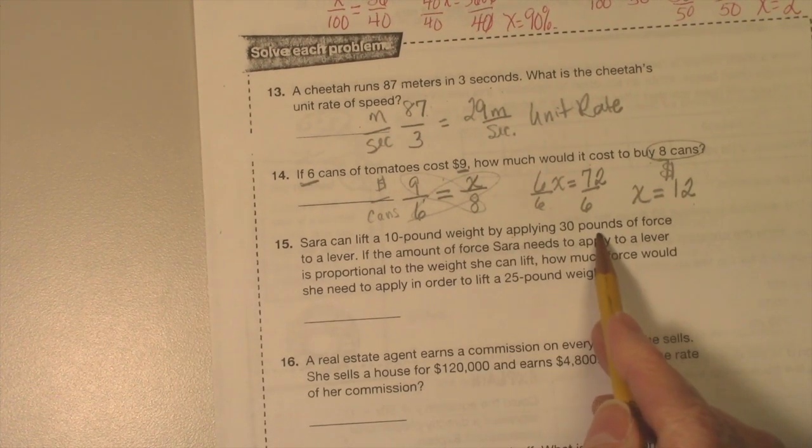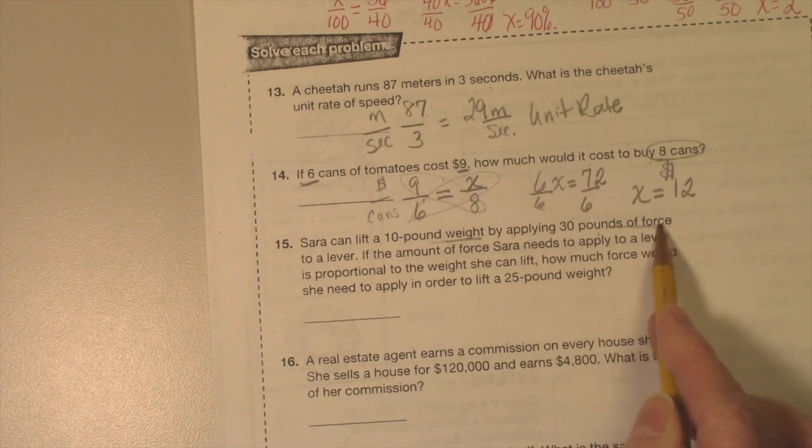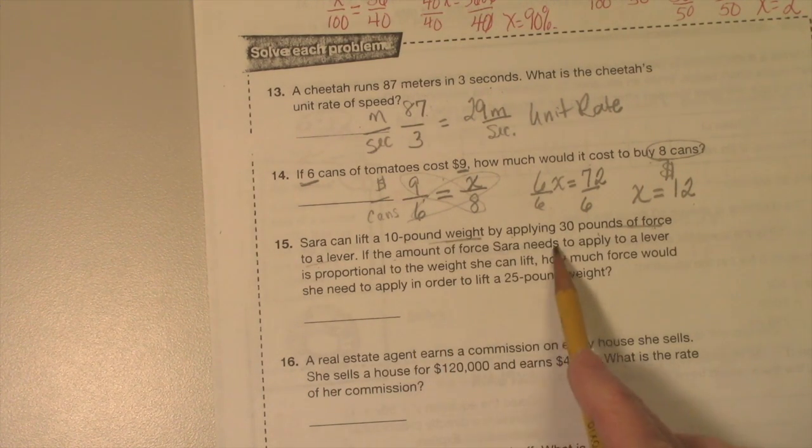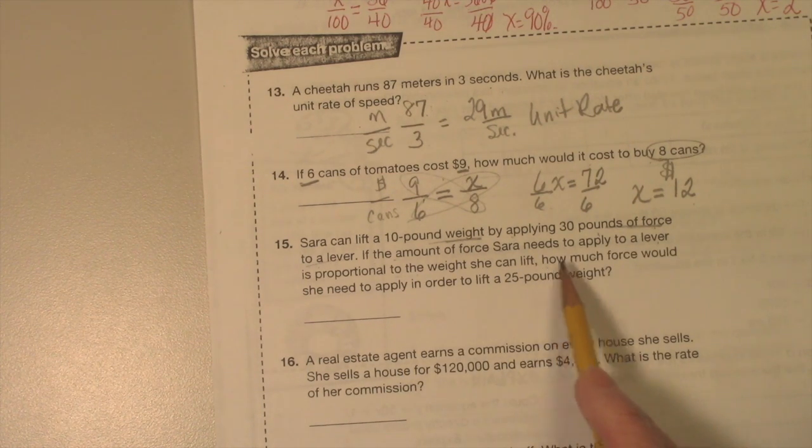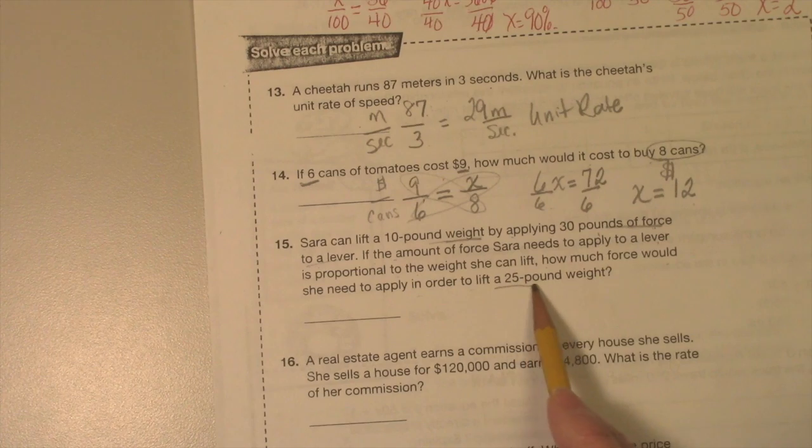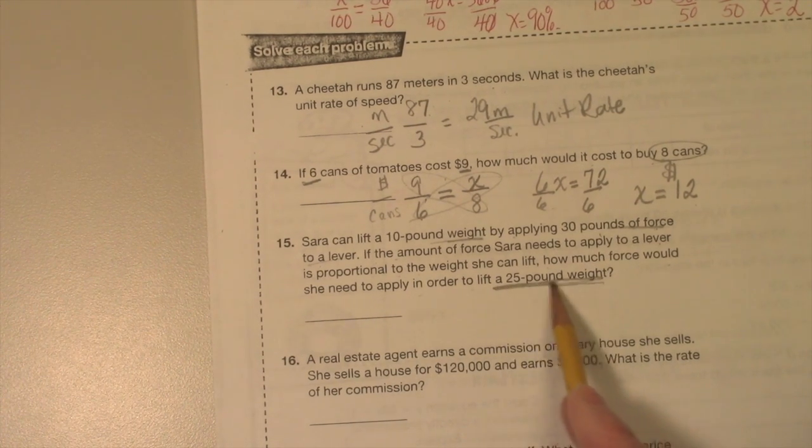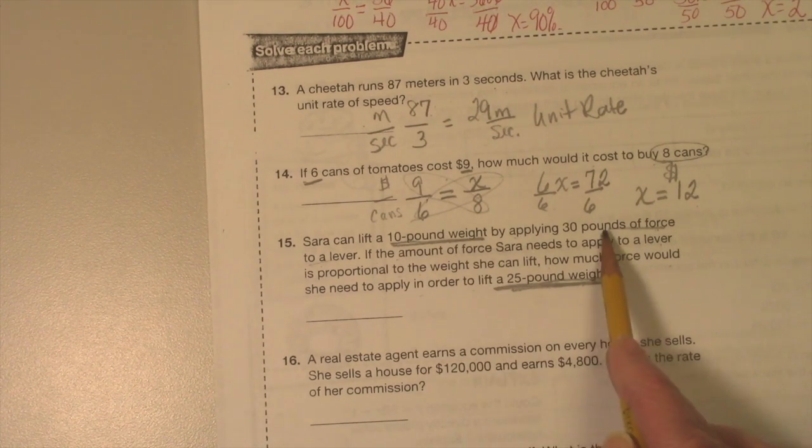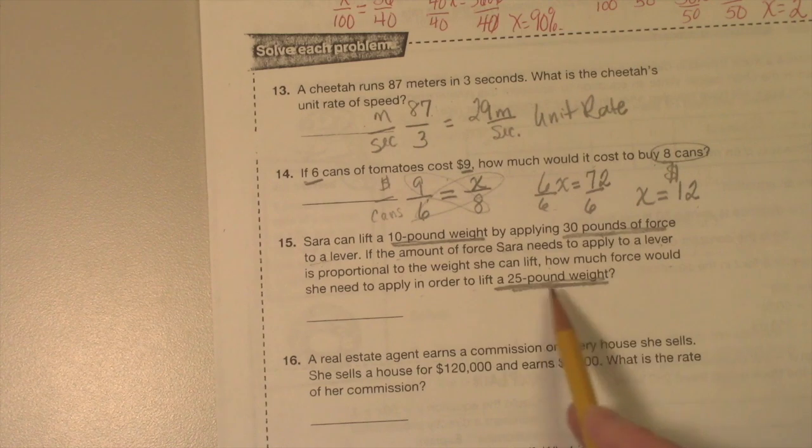Okay, Sarah can lift a 10-pound weight by applying 30 pounds of force to a lever. If the amount of force Sarah needs to apply to a lever is proportional to the weight she can lift, how much force would she need to apply in order to lift a 25-pound weight? Yeah, lots of words, but basically this: 25-pound weight, 10-pound weight, force 30 pounds force. So I have three numbers and I need to find the fourth.